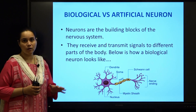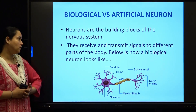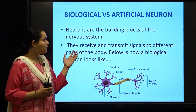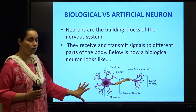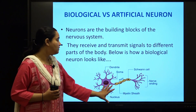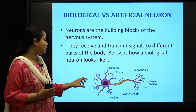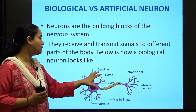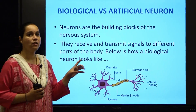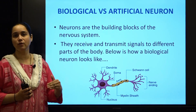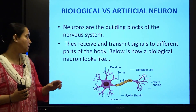Neurons are the basic building blocks of our nervous system. These neurons receive and transmit the signals to different parts of the body. This is how a biological neuron looks like. You can see here there are different parts of a single biological neuron. The main parts are dendrite, soma, axon, and nucleus. When we see the working of it, we are trying to get an inspiration for an artificial neuron from it — how it does interconnection, how it does processing.